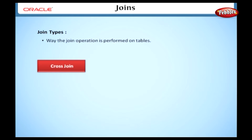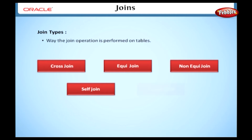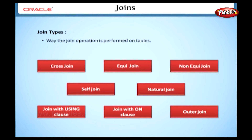The different types of joins are: cross join, equi join, non-equi join, self join, natural join, join with using clause, join with on clause, and outer join. Let's see each type in detail.